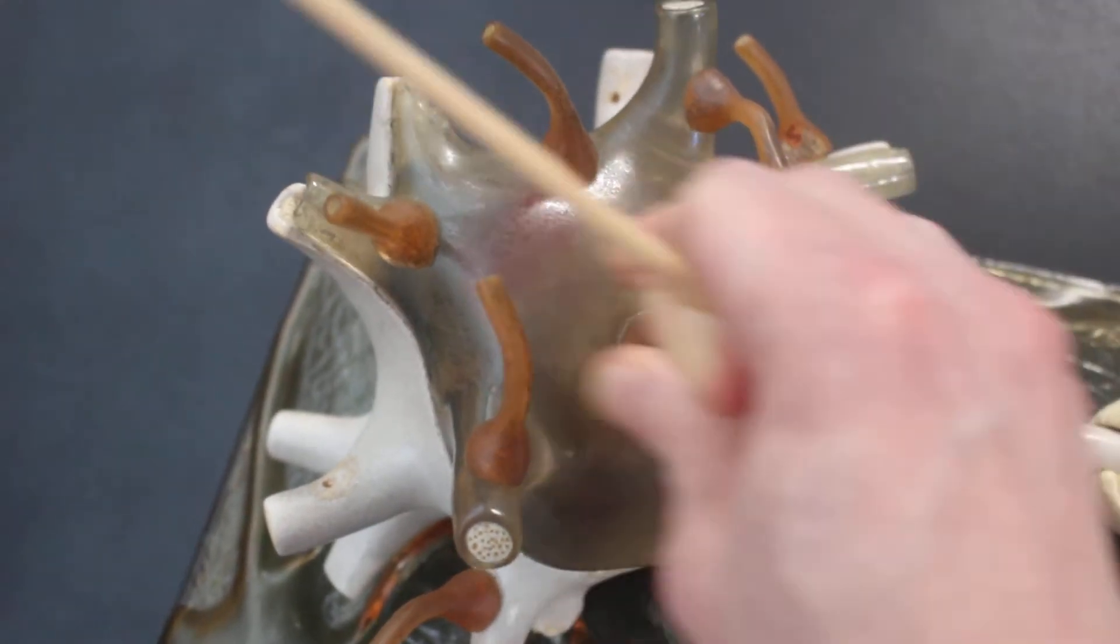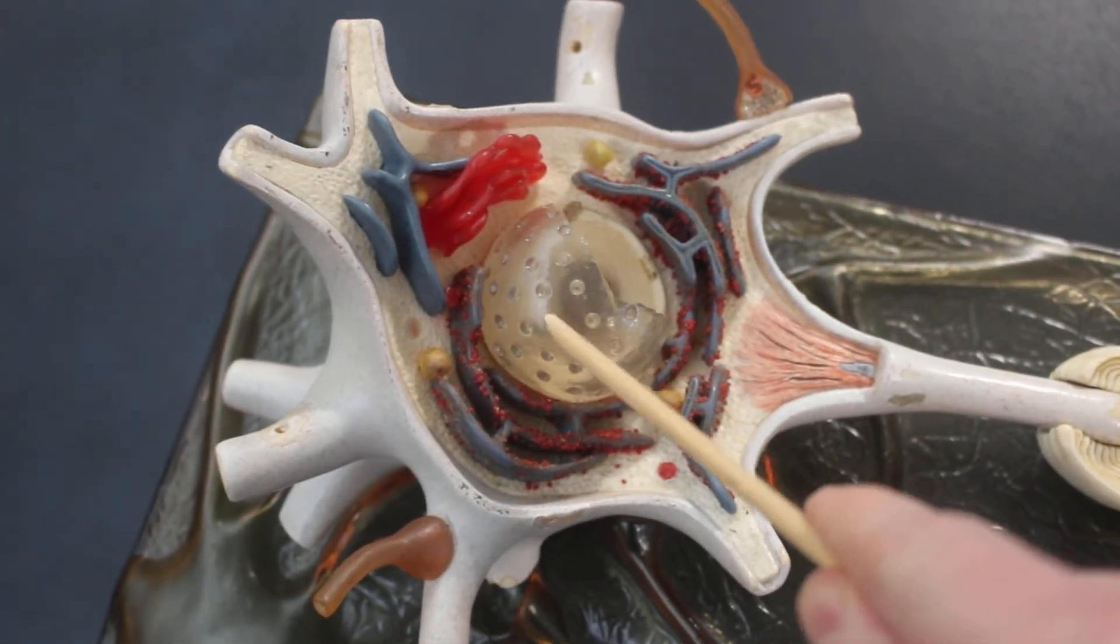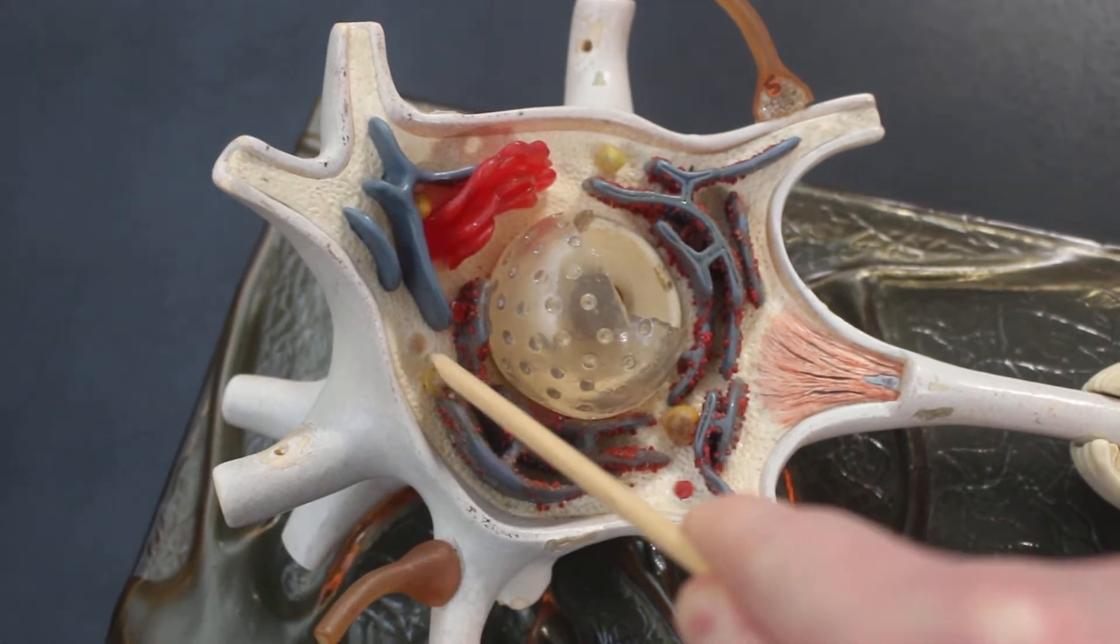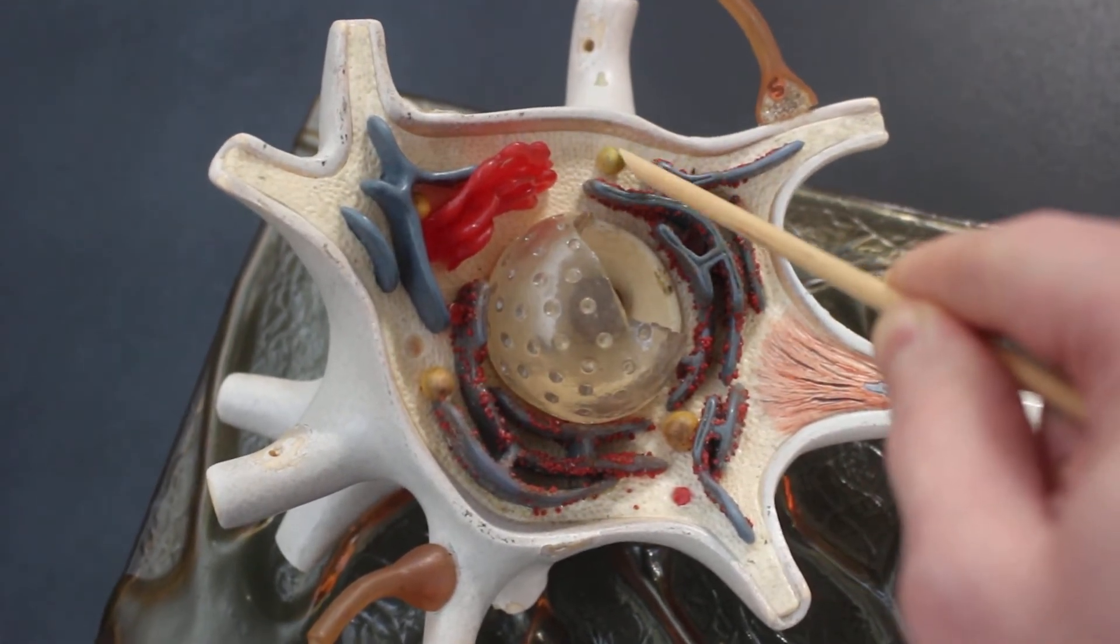This whole thing here is the cell body. Open it up. This dome is the nucleus. These little yellowish spheroids, these are the Nissl bodies.